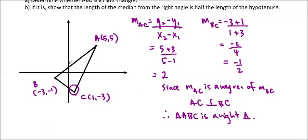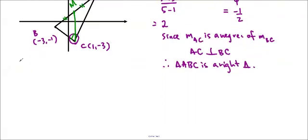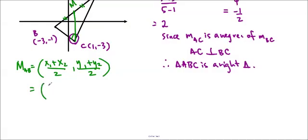Now it says show that the length of the median from the right angle is half the length of the hypotenuse. So the hypotenuse is AB. I'm going to have to find that length. And then I'm going to find the length from this point, let's call that M, to C, because now I know that's the right angle. First, I'll find that point M_AB. X1 plus X2 over 2, Y1 plus Y2 over 2. So I know it's negative 3 plus 5 over 2 and negative 1 plus 5 over 2, which ends up being (1, 2).